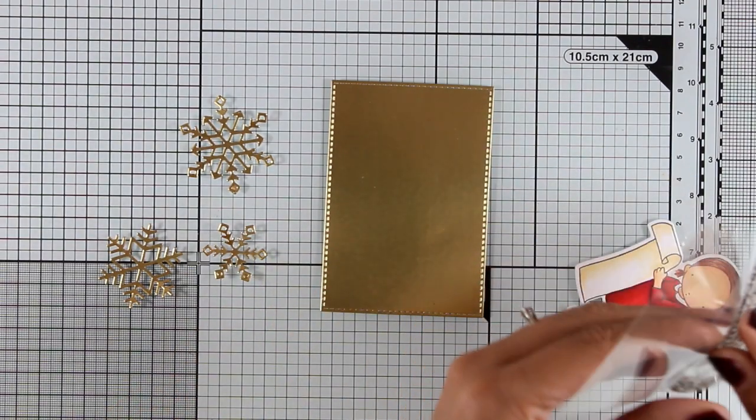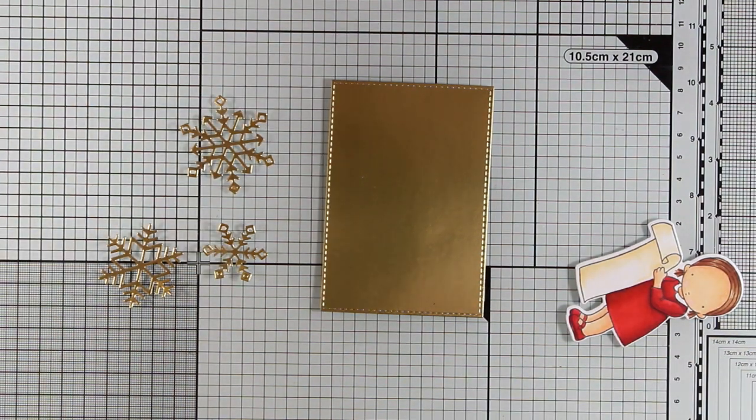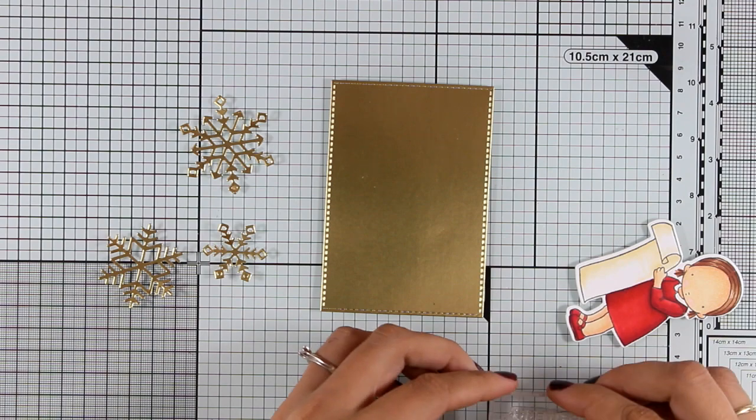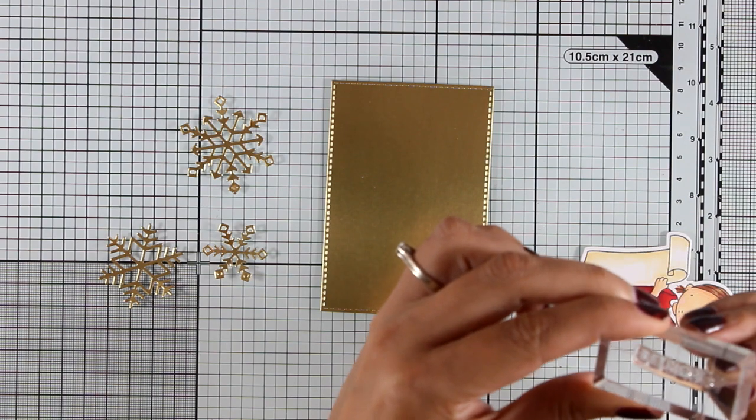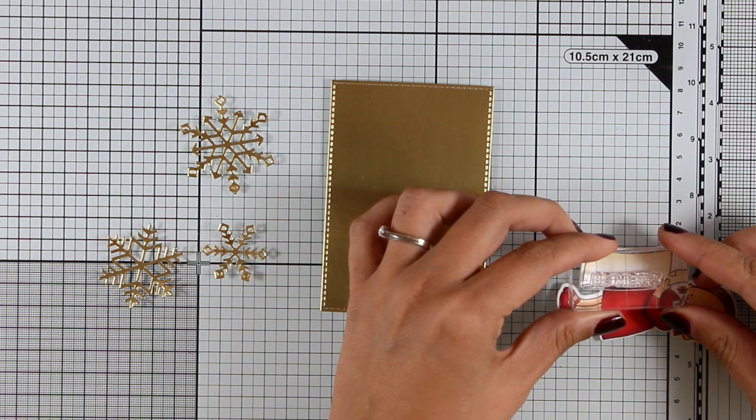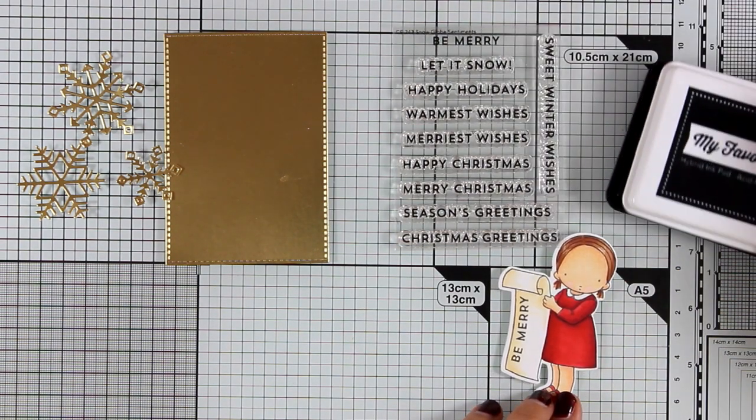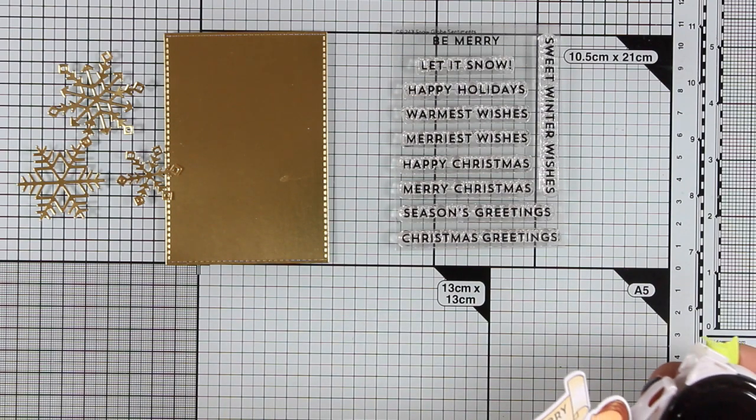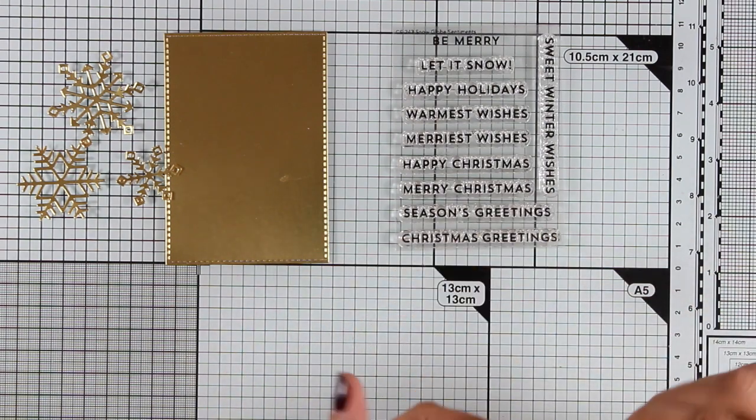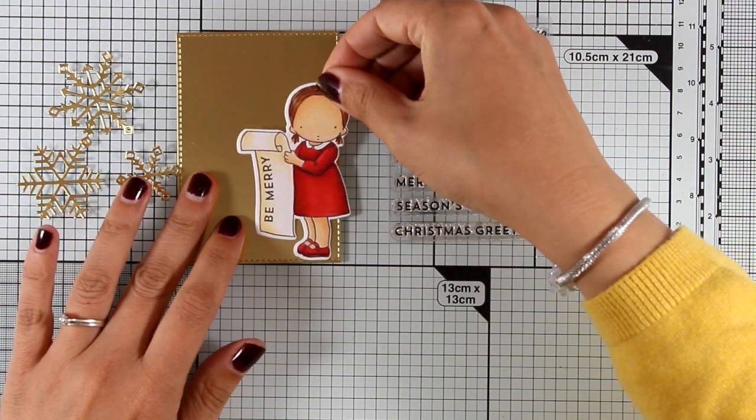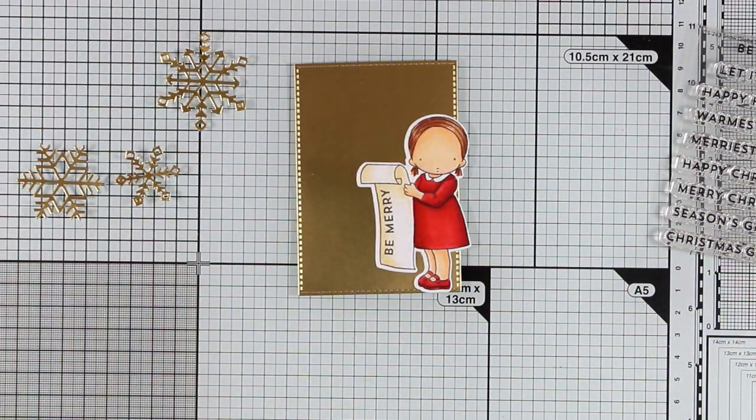I have already cut out those snowflakes out of the same cardstock as the golden panel. And now I have chosen one of the sentiments that says Be Merry and I'm going to place it on top of my acrylic block on an angle so it matches the curve on the list. So I'm going to stamp my sentiment there and you can see how nicely it follows the curve. And by the way, this comes from a stamp set that is called Snowglobe Sentiments and these are actually all sentiments that fit nicely inside that panel that you add below the snowglobe. But they are so tiny so they match perfectly that list the little girl is holding.